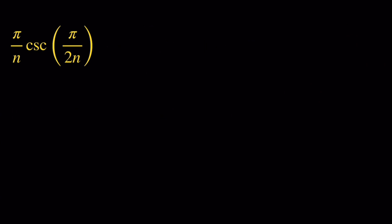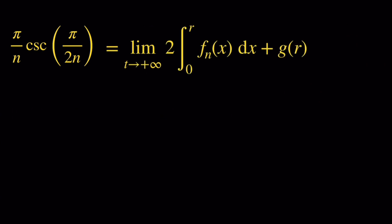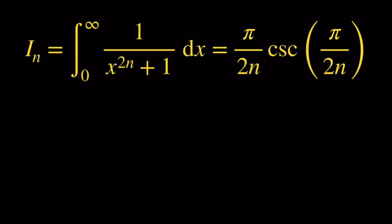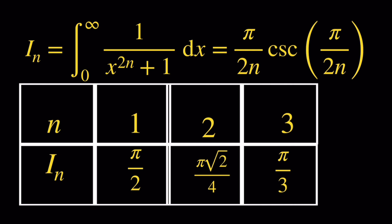Taking the limit of the integral, we know g of r tends to 0, and the integral from 0 to r tends to the integral from 0 to infinity, which is precisely I sub n. Dividing both sides by 2, we get that I sub n equals pi over 2n times the cosecant of pi over 2n. Here are some values: for n equals 1, I sub n equals pi over 2; for n equals 2, I sub n equals pi root 2 over 4; and for n equals 3, I sub n equals pi over 3.